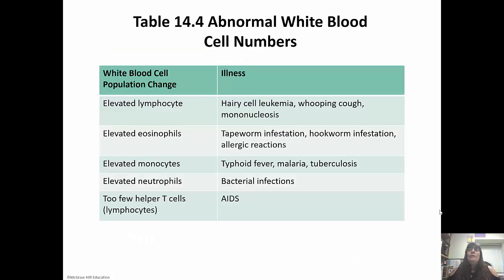If you have elevated lymphocytes, you could have leukemia or whooping cough. Elevated eosinophils indicate tapeworm infestations, hookworm, or an allergic reaction. Elevated monocytes suggest typhoid fever or malaria. Elevated neutrophils are usually associated with bacterial infections. And if you don't have enough helper T cells or lymphocytes, that suggests AIDS.